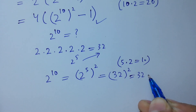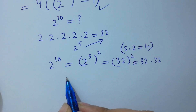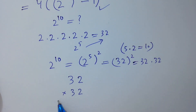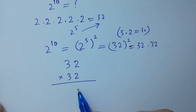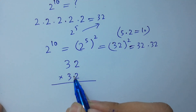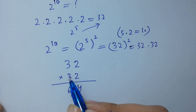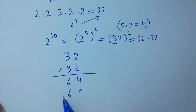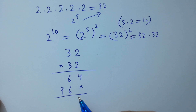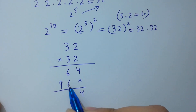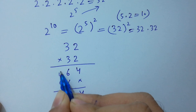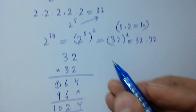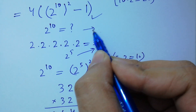32 times 32: 2 times 2 is 4, 3 times 2 is 6, 3 times 2 is 6, then 3 times 3 is 9. We get 4, 6 plus 6 is 12, carry 1, 9 plus 1 we get 10. So 2 to the power 10 is equal to 1024.